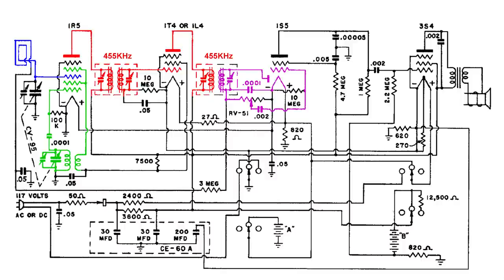And that signal goes up to the control grid of the 1S5. The 1S5 amplifies it, sends it over to the control grid of the 3S4. It amplifies it enough to drive the speaker.